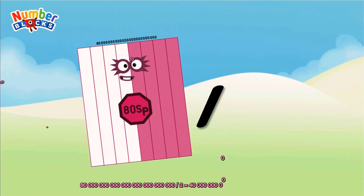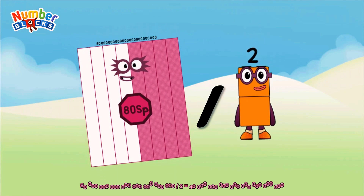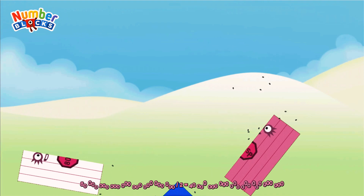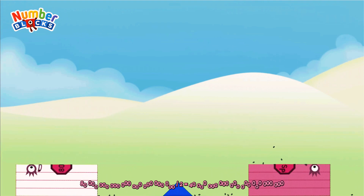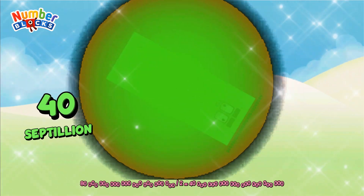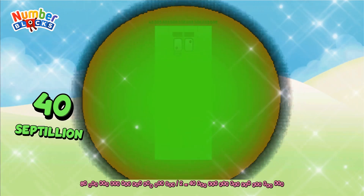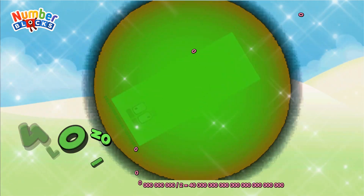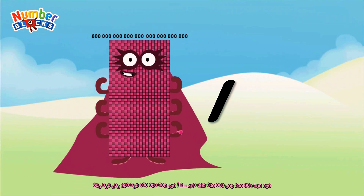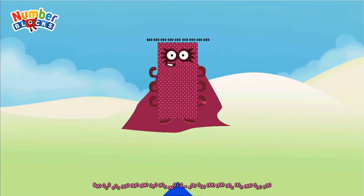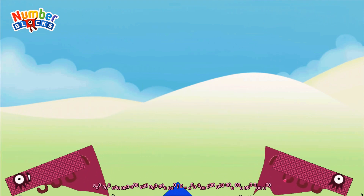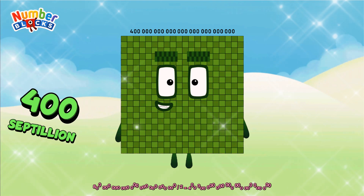Eight-septillion divided by two equals forty-septillion. Eight-hundred-septillion divided by two equals four-hundred-septillion.